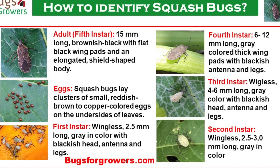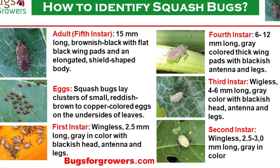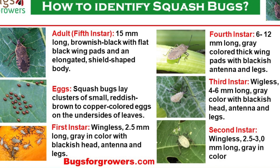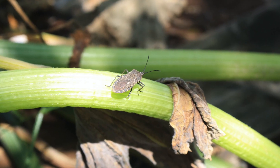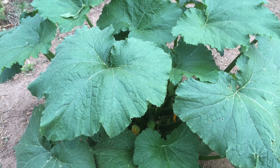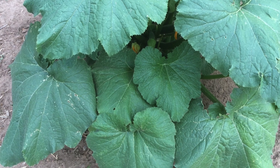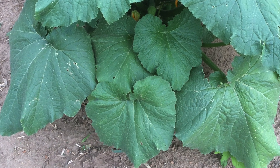Over five stages, nymphs grow from 2.5 mm to 12 mm long within four to six weeks before becoming adults. Squash bugs overwinter as adults in plant debris and under rocks around gardens. In early spring, the adults emerge from the overwintering sites, move to growing cucurbit plants like zucchini and begin feeding and mating.